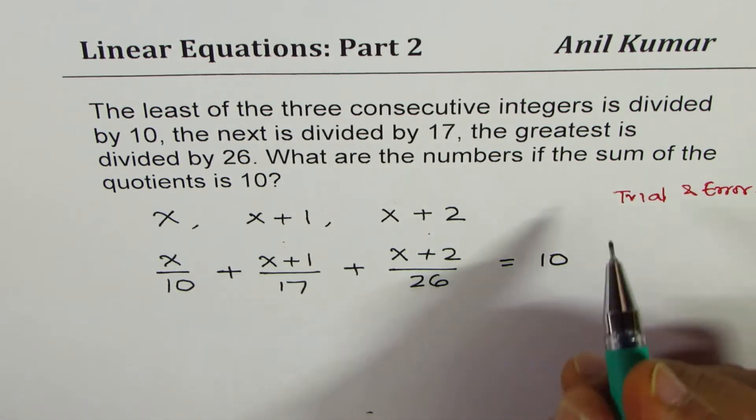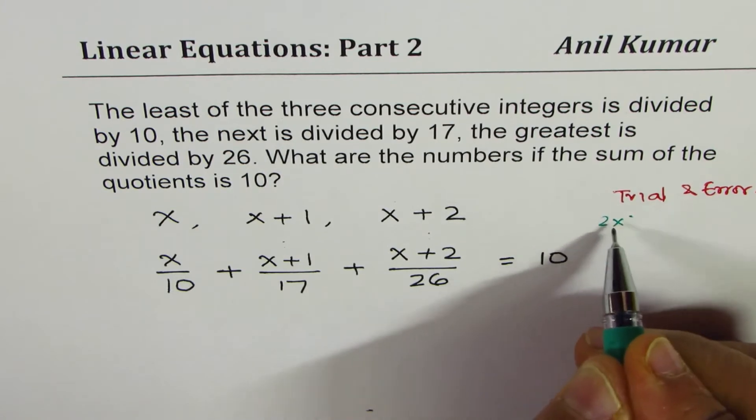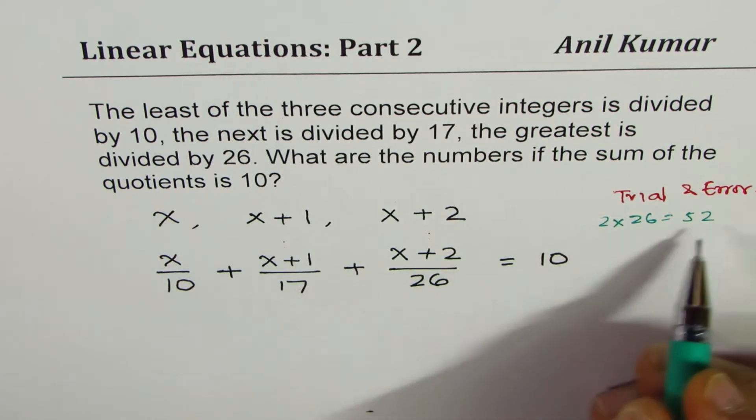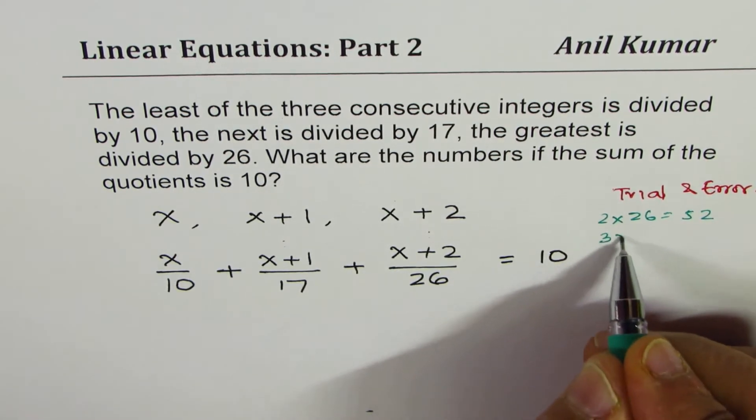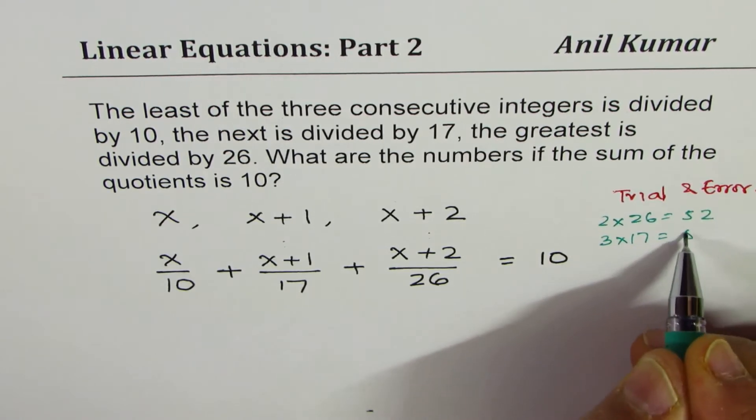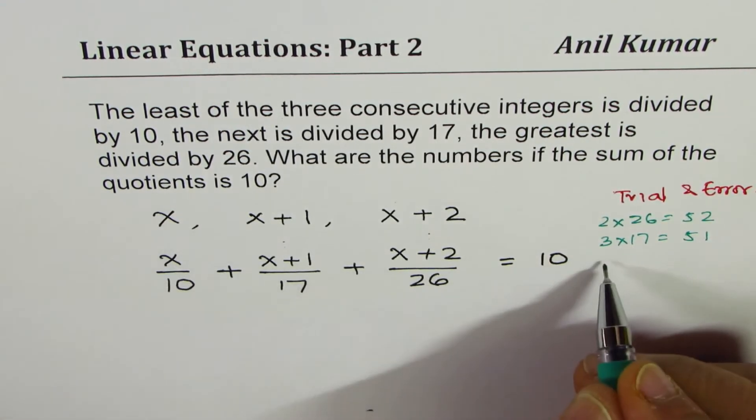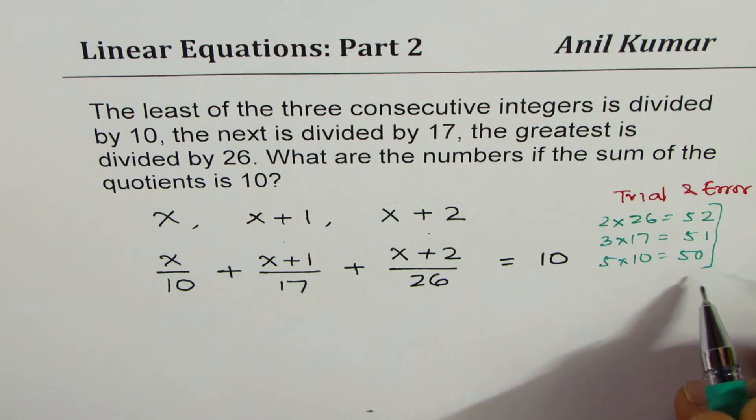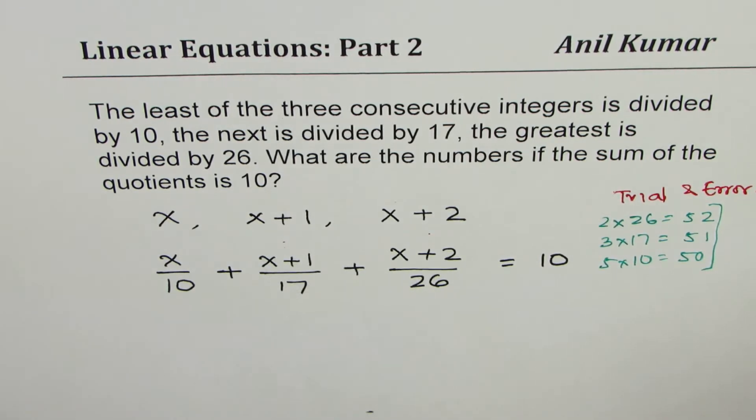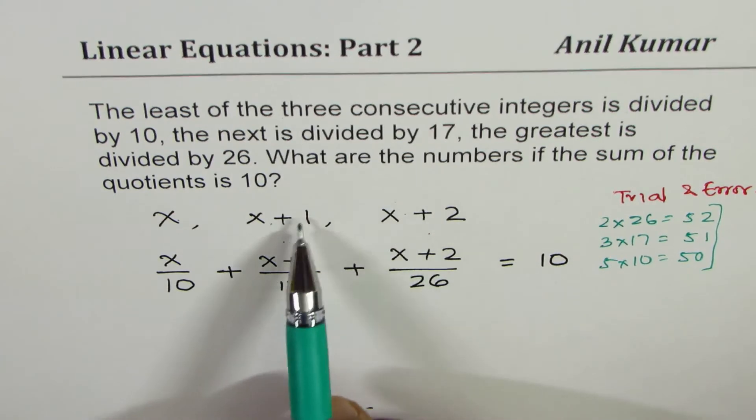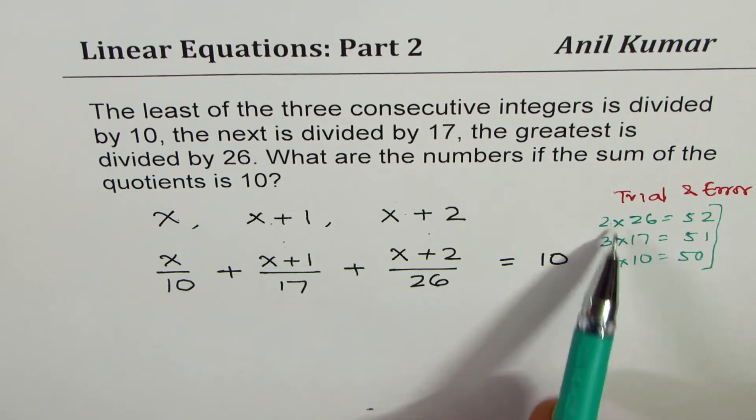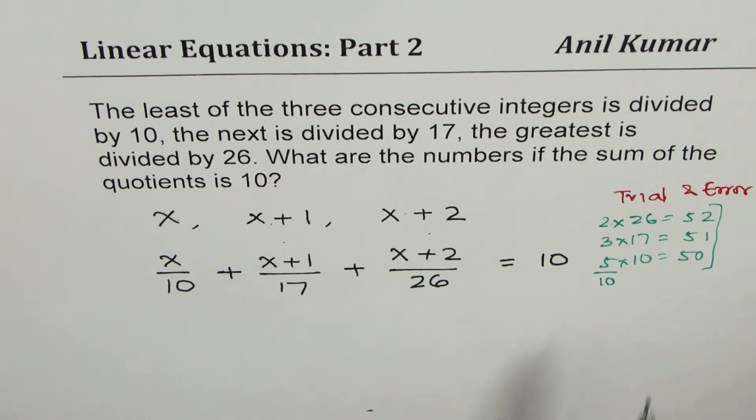So if I do 26, I mean 2 times 26 now, we get 52. So what number is close to 17, closer to 52? 3 times 17. Do you see that? 3 times 17 is 51 and 5 times 10 is 50. We do get three numbers which are consecutive and which can satisfy our condition of three numbers being consecutive when divided by the given numbers will result into 10. Do you see that? 2 plus 3 plus 5 is 10. So for a multiple choice question or sometimes, that could be a very fast approach.